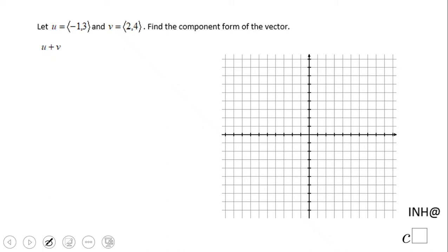Welcome back to C square. In this example we're going to add two vectors, and I'm going to show you two ways: one graphically and one algebraically. So let's first take a look at the graphical way of adding vectors.